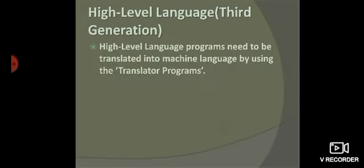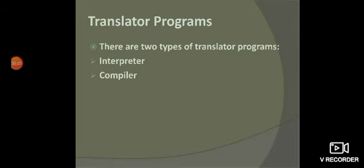Next, high level language programs need to be translated into machine language by the translator programs. So, there are two types of translator programs that are used in high level languages, and that are interpreter and compiler.